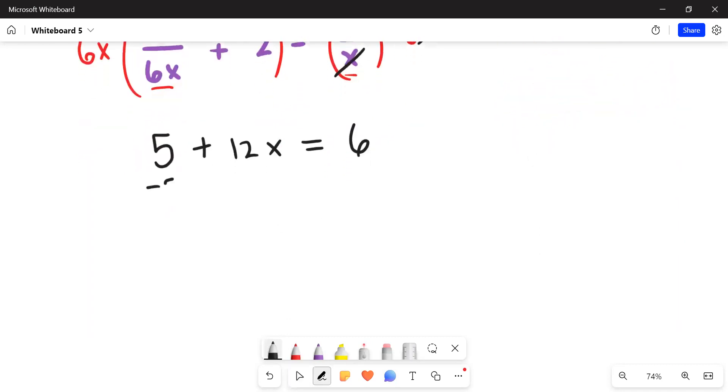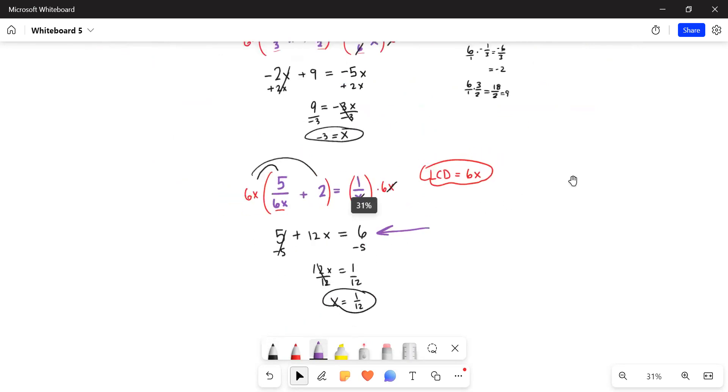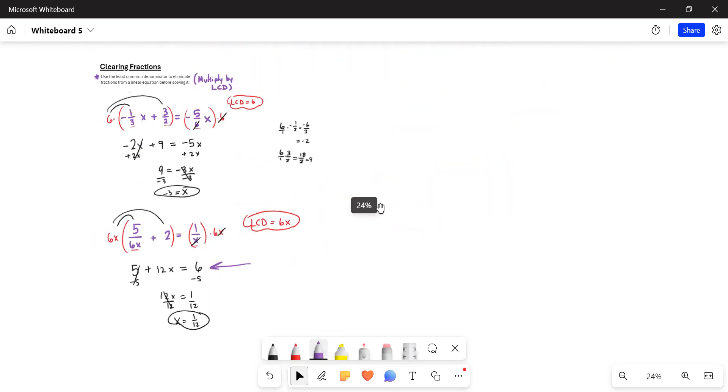As we continue solving this equation, if we subtract five from each side, we'll get 12x equals one. And the last step, dividing by 12 will get us x is equal to one-twelfth. Notice that when we got to this line here, all of the fractions were gone. That's where it gets its name, clearing fractions. I hope you like this as a technique to simplify the process of solving linear equations.